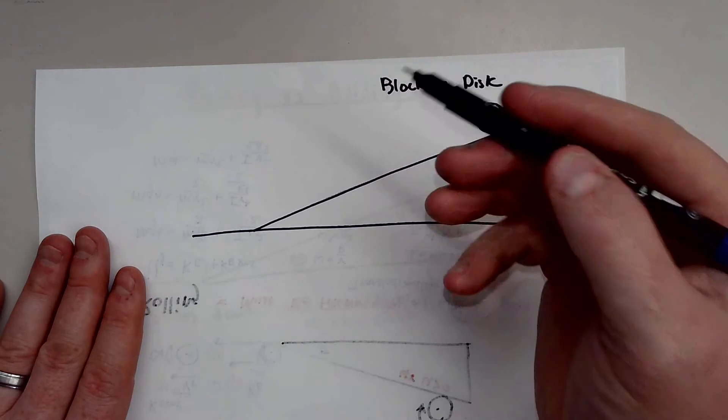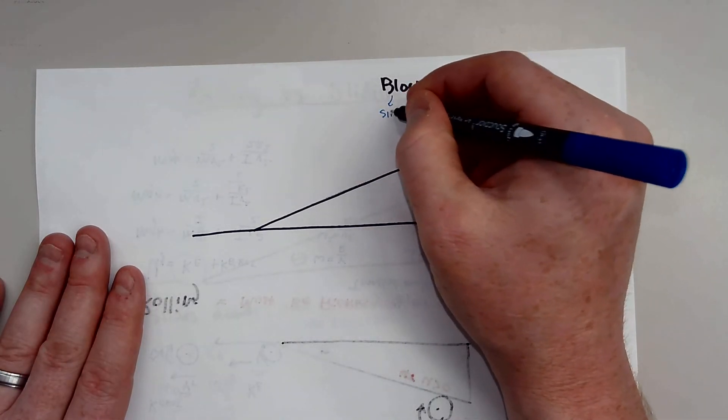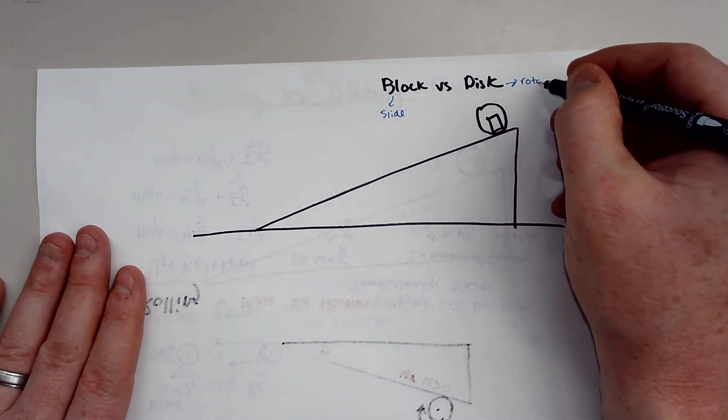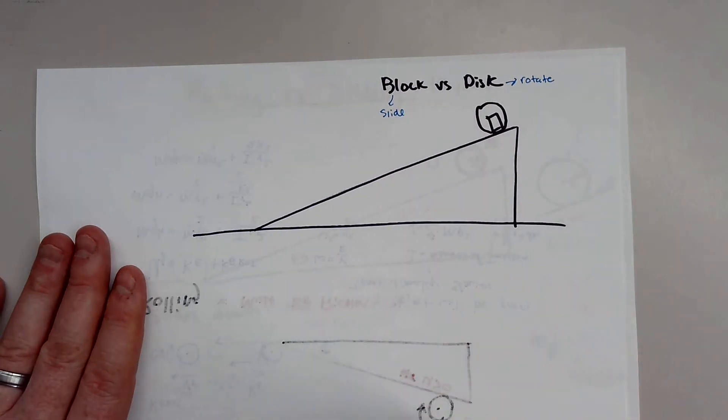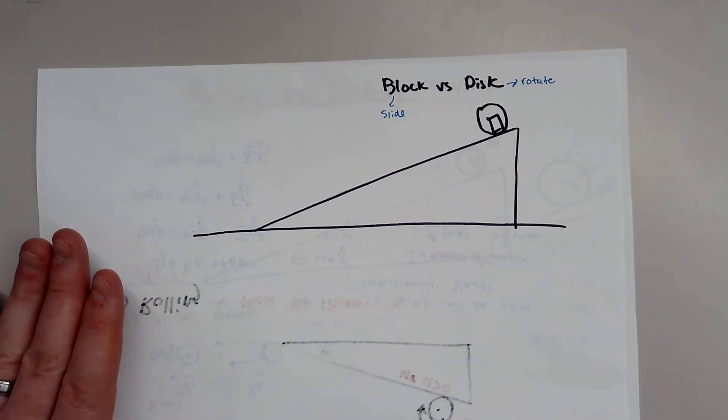Now the block will slide. And the disk will rotate. So some sort of ramp where that's able to do this. So the block will slide and the disk will rotate. So a lot of physics students will see this.